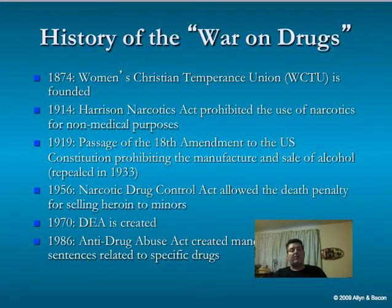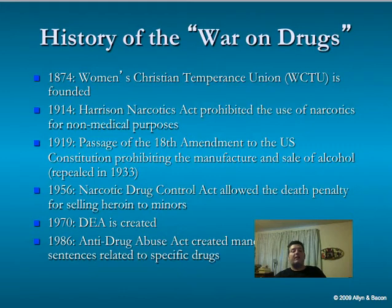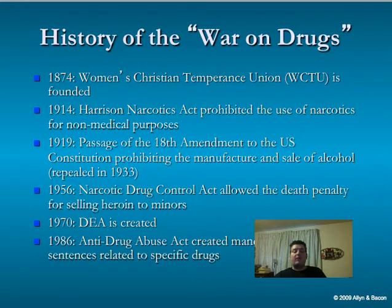In 1914, the Harrison Narcotics Act prohibited the use of narcotics for non-medical purposes. Before this time, heroin, cocaine, and other narcotics could be purchased from street peddlers. In 1919, passage of the 18th Amendment prohibited the manufacture and sale of alcohol — known as Prohibition — which was repealed in 1933. In 1956, the Narcotic Drug Control Act allowed the death penalty for selling heroin to minors. In 1970, the DEA — Drug Enforcement Agency — was created. In 1986, the Anti-Drug Abuse Act created mandatory minimum sentences related to specific drugs.